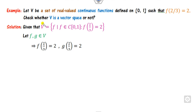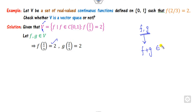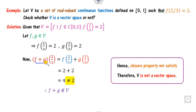Given a function V defined over this set, to prove closure we consider two functions f and g which belong to V, meaning f(2/3) = 2 and g(2/3) = 2. The closure property requires that f + g must also belong to V. We start from f + g and try to prove whether it equals 2 — and we can see it is not equal to 2. It means f + g does not belong to V. Hence closure is not satisfied, so it is not a vector space.